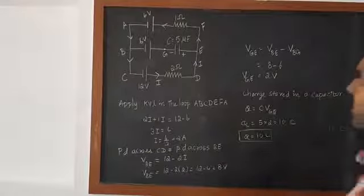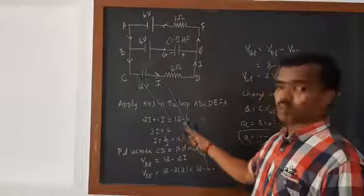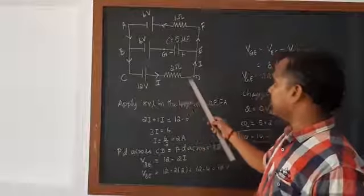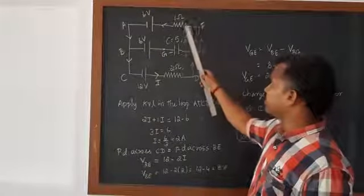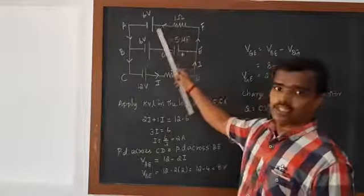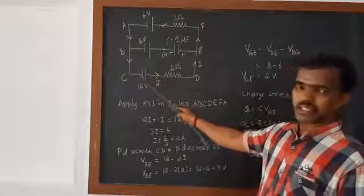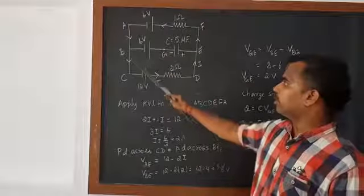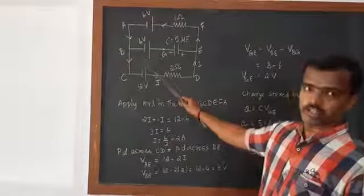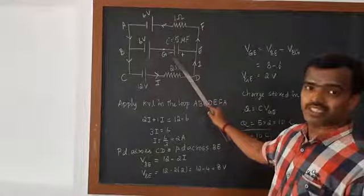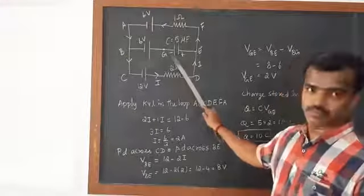So this is the given diagram. Here we have a 12 volt battery — this is the positive terminal, this is the negative terminal — which has a 2 ohm resistor. Here we have a 1 ohm resistor and a 6 volt battery. We also have points B and E, with a 6 volt battery between them having a negative and positive terminal, and here we have the capacitor.